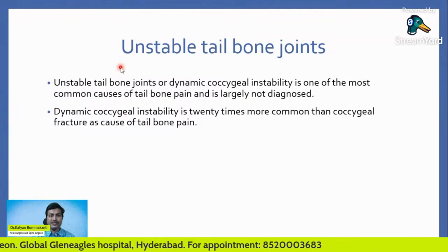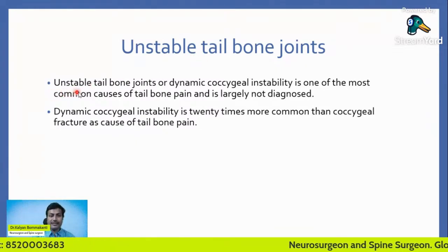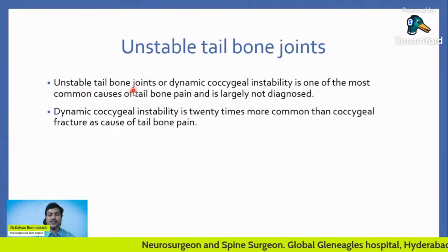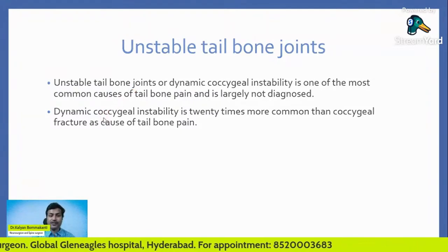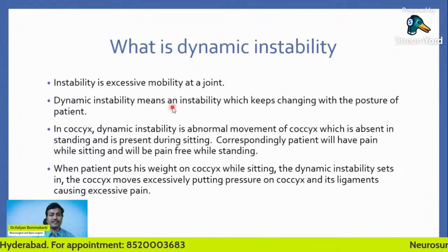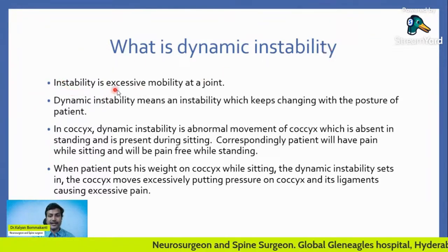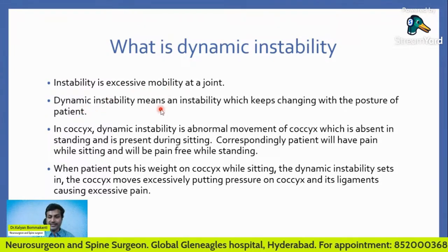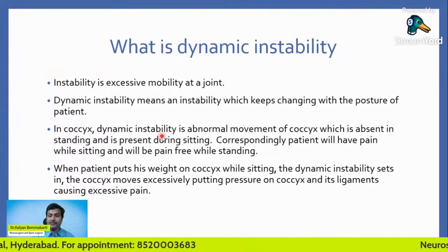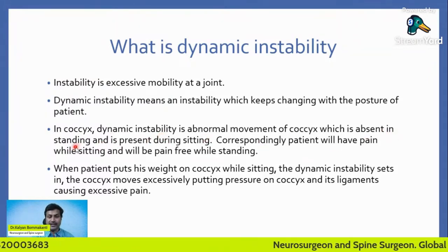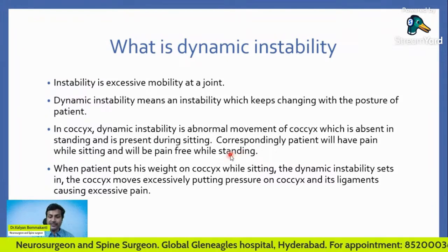You need to understand the concept of unstable tailbone joints. The tailbone is the coccyx. Unstable tailbone joints — dynamic coccygeal instability — is one of the most common causes of tailbone pain and is largely not diagnosed. This dynamic coccygeal instability is 20 times more common than a coccygeal fracture. Instability means excessive mobility at a joint. Dynamic instability means an instability which keeps changing with posture — in the coccyx, it is absent in standing and present during sitting. Correspondingly, the patient has pain while sitting and is pain-free while standing.